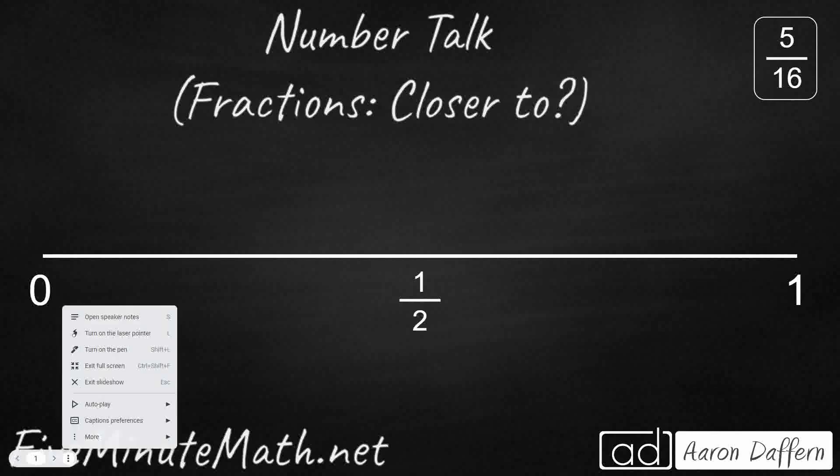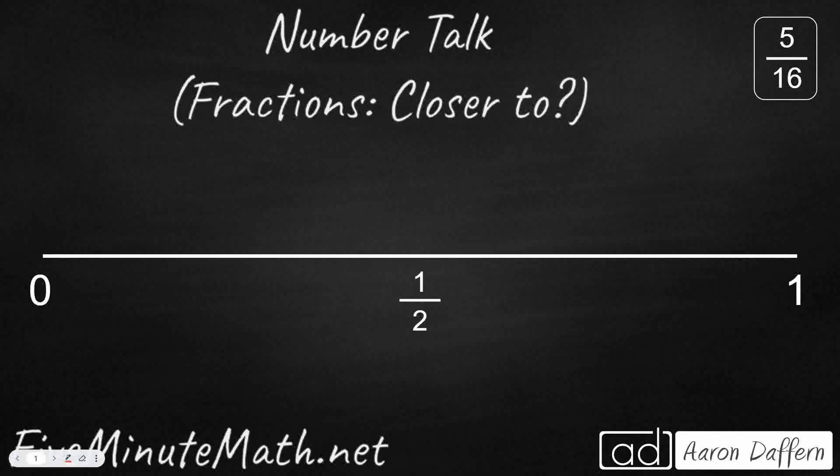So one way that we can think about this here is to really look at our denominator, 16, and rewrite these fractions, or these numbers, as sixteenths. So how do we write 0 as sixteenths? Well, 0 is just the same as any fraction that has a 0 in the numerator, so I can make the denominator anything I want to. So 0/16 is going to work.